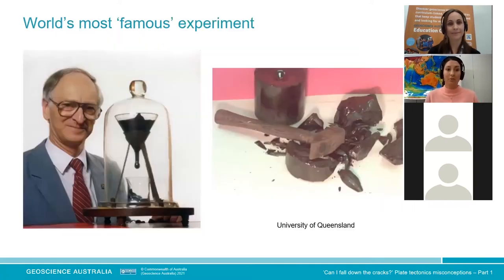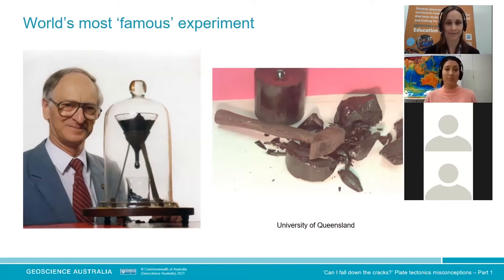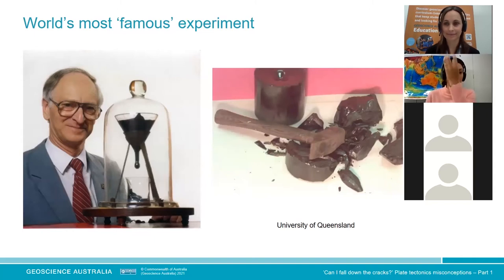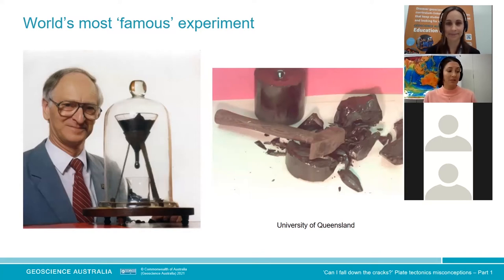Another example is what I've called the world's most famous experiment — and it's Australian. This is the pitch drop experiment at the University of Queensland, started in 1927. It took from 1927 until 1938 — 11 years — for the very first drop to drop. Minute to minute it looks solid, then now and then a drop forms and falls. If you take the same material and hit it with a hammer, the sudden external stress causes it to shatter. This is another example of the properties that mantle material has.